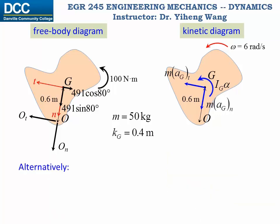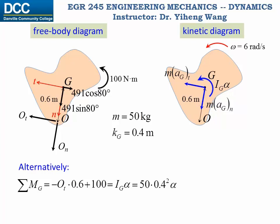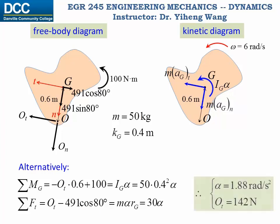We can also try an alternative approach: summarizing the moment about point G instead of point O. In this case the weight force has no moment about G, but the unknown force Ot does. This gives: resultant moment about G equals IG·alpha, where IG is determined from M·Kg-squared. This equation has two unknowns, Ot and alpha, but combined with the resultant force equation along the tangential direction, we have two equations and two unknowns, which can be solved simultaneously. Both approaches yield the same results, so you can choose whichever you prefer.